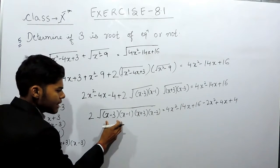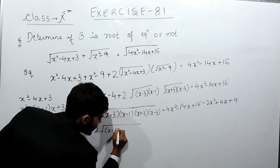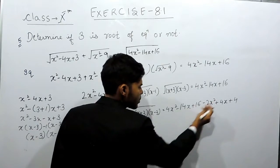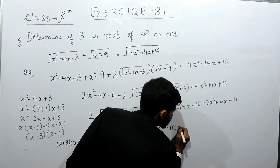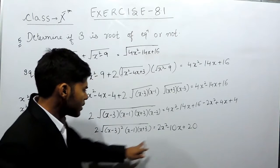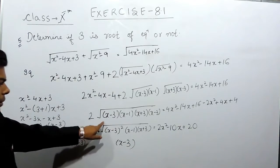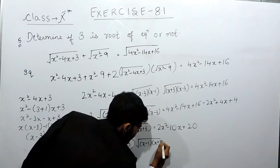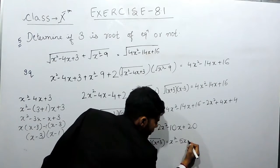Now we can see that here there is (x minus 3) and also (x minus 3). So this will be 2 times under root of the whole square of (x minus 3) times (x minus 1)(x plus 3), which equals 4x² minus 2x² minus 14x plus 4x — that is minus 10x — and 16 plus 4, that is 20. These cancel out, so (x minus 3) comes out of the root. We get under root of (x minus 1)(x plus 3) equal to x² minus 5x plus 10.